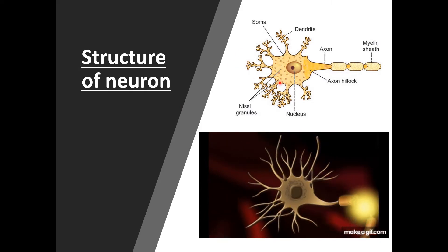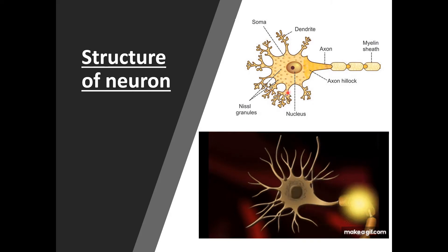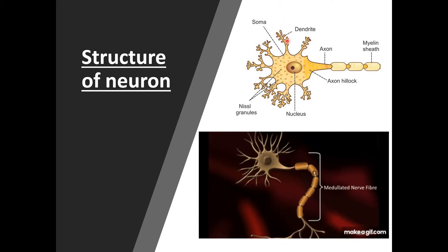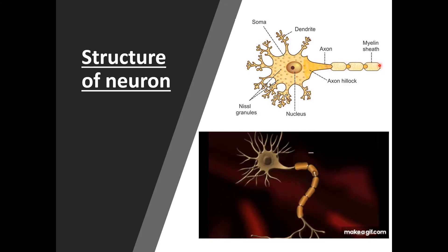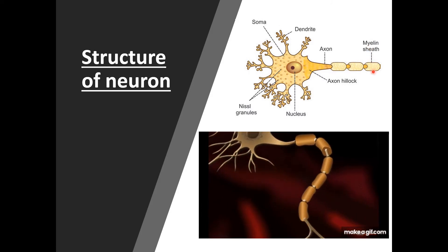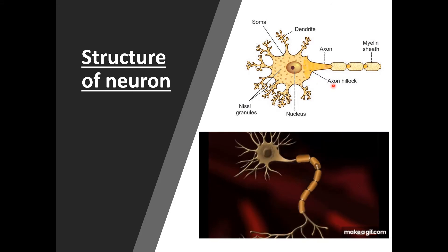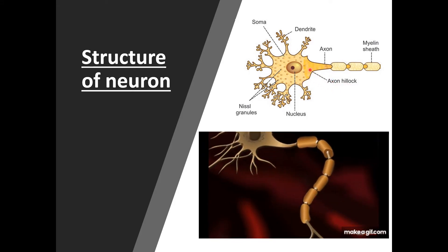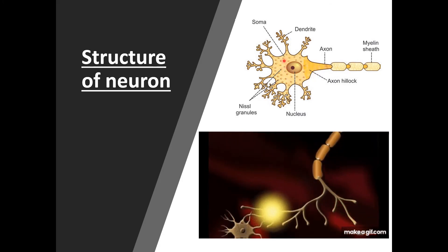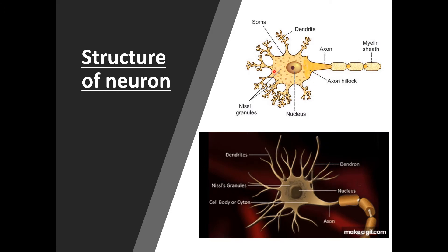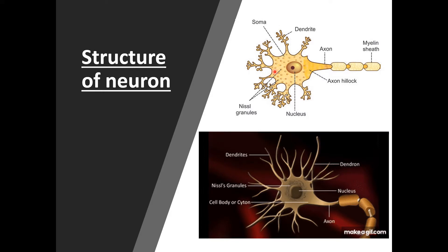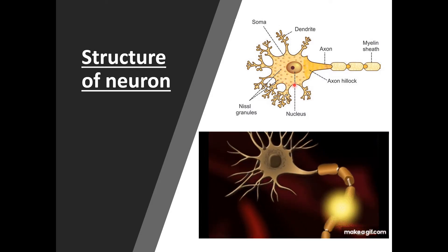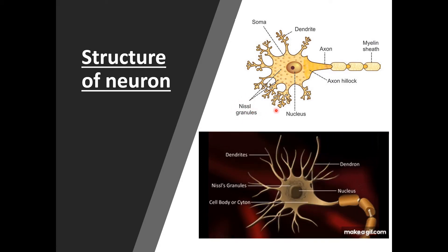In the diagram of the neuron, centrally there is a nucleus. The cell body is called soma or perikaryon. The short process is the dendrite and the long process is the axon. Around the axon there is a myelin sheath. The initial segment of the axon is known as the axon hillock, where Nissl granules are absent. In the soma, Nissl granules are present, giving it a spotted appearance.